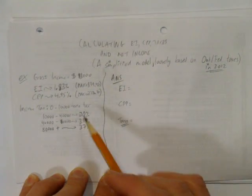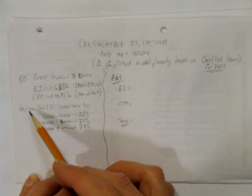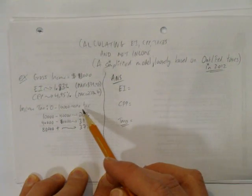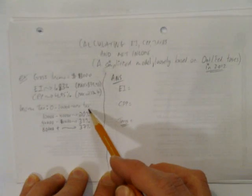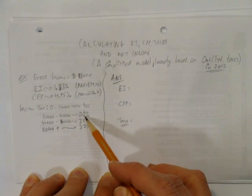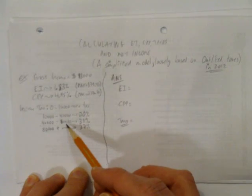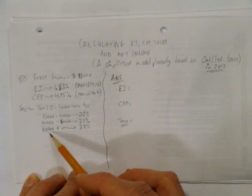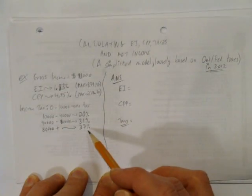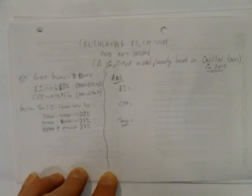Finally, and again it's very simplified, their income tax we're going to calculate as follows. Between $0 and $10,000, they'll pay no tax. From $10,000 to $40,000, they'll pay 20%. From $40,000 to $80,000, they'll pay 31%. And all their money, $80,000 and over, they'll pay 37%.